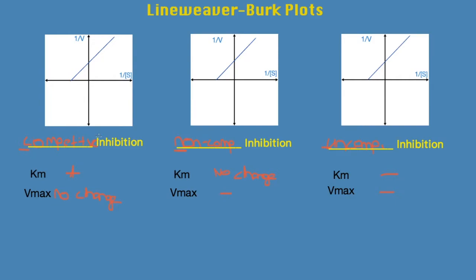Now we see that, as I mentioned, Km is going to increase, but Vmax is not going to have any change. So the graph is going to look something like this.